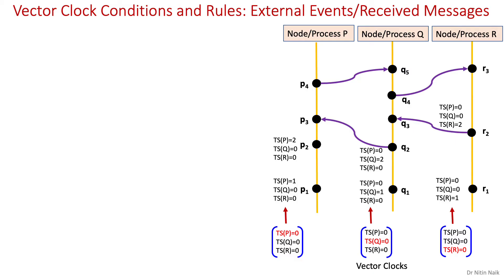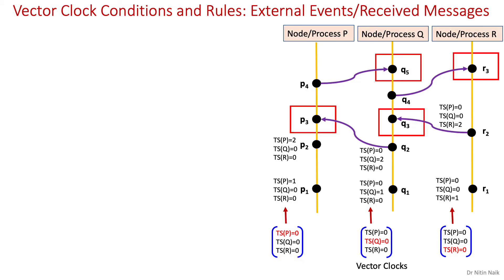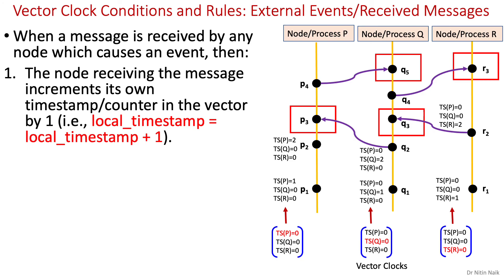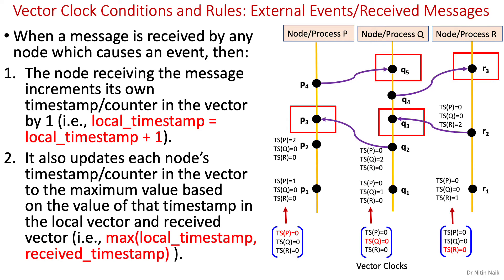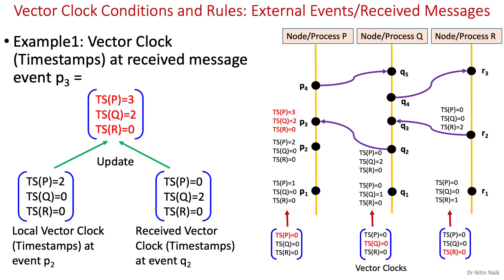The second condition and rule is for external events or received messages. When a message is received by any node which causes an event, the node receiving the message increments its own timestamp in the vector by 1. It also updates each node's timestamp in the vector to the maximum value based on the value of that timestamp in the local vector and received vector. Let's look at some examples.